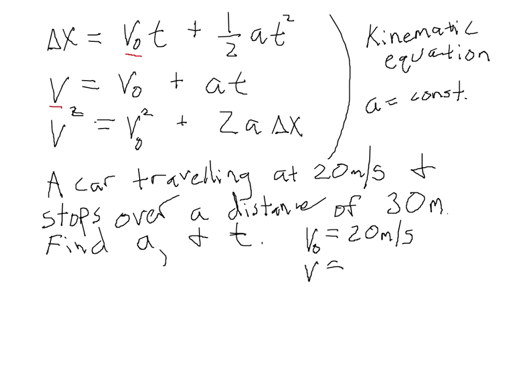We know that at the end of the problem the car is stopped. So its speed is equal to zero. Finally, we're told that the displacement of the car during the time that we're considering is 30 meters. We're looking for the acceleration and the time. So now have a look at your kinematic equations and see which equation gives us what we want to know in terms of what we already know.